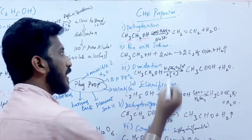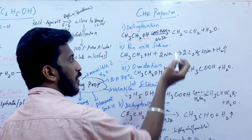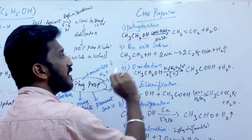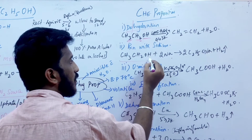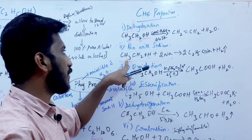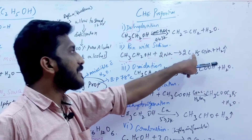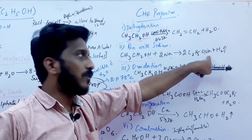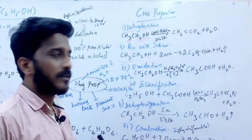Next, when ethanol reacts with sodium metal, hydrogen is eliminated. You get two molecules of C2H5ONa — that is sodium ethoxide.